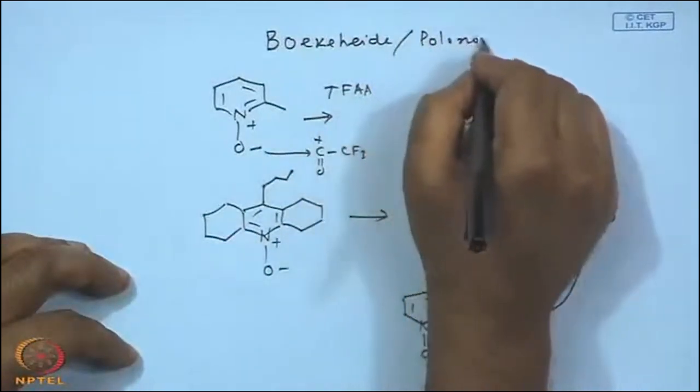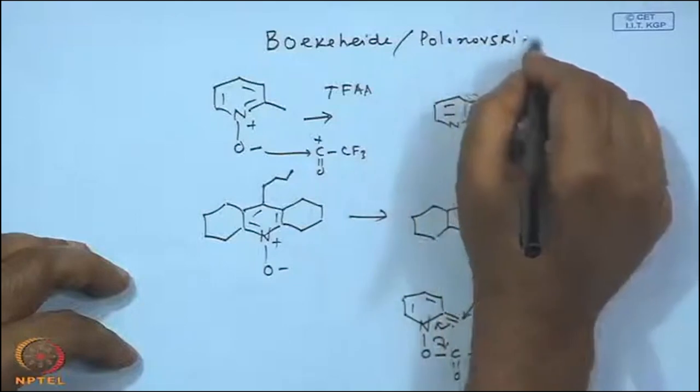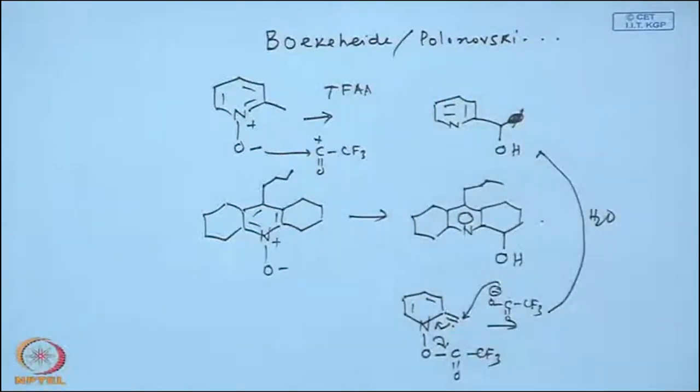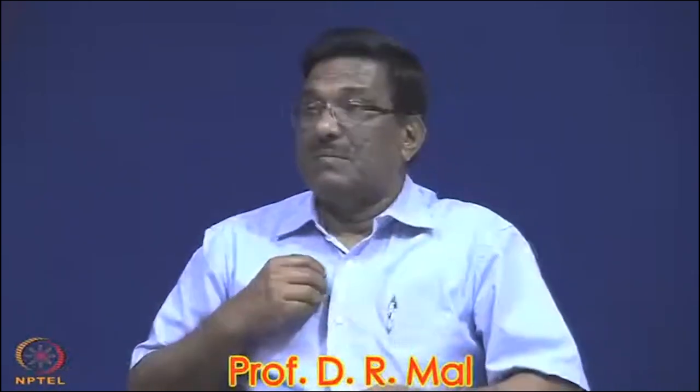Summary: heterocyclic rearrangements - in most cases they belong to ring opening and ring closing. Achmatowicz - ring opening, ring closing. Piancatelli - also ring opening, ring closing. Dimroth - ring opening, ring closing.